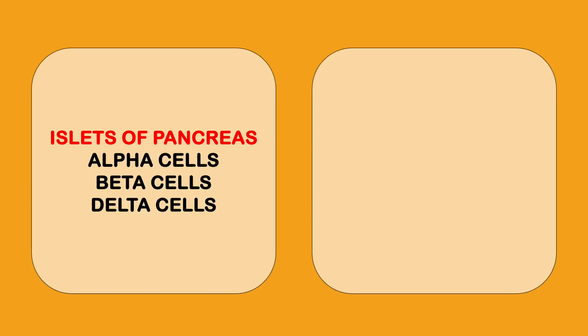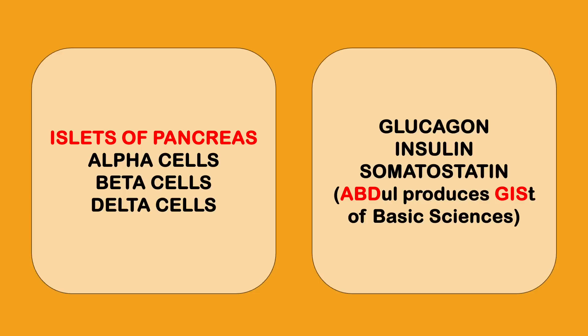Islets of pancreas, alpha cells, beta cells and delta cells. How do I remember these? It's very simple guys. It is glucagon, insulin, somatostatin. If you can't remember, there's a mnemonic that Abdul produces gist of basic sciences. Abdul is me who produces the gist, glucagon, insulin and somatostatin of the islets of pancreas cells. Alpha cells will secrete glucagon, beta, insulin and delta somatostatin.